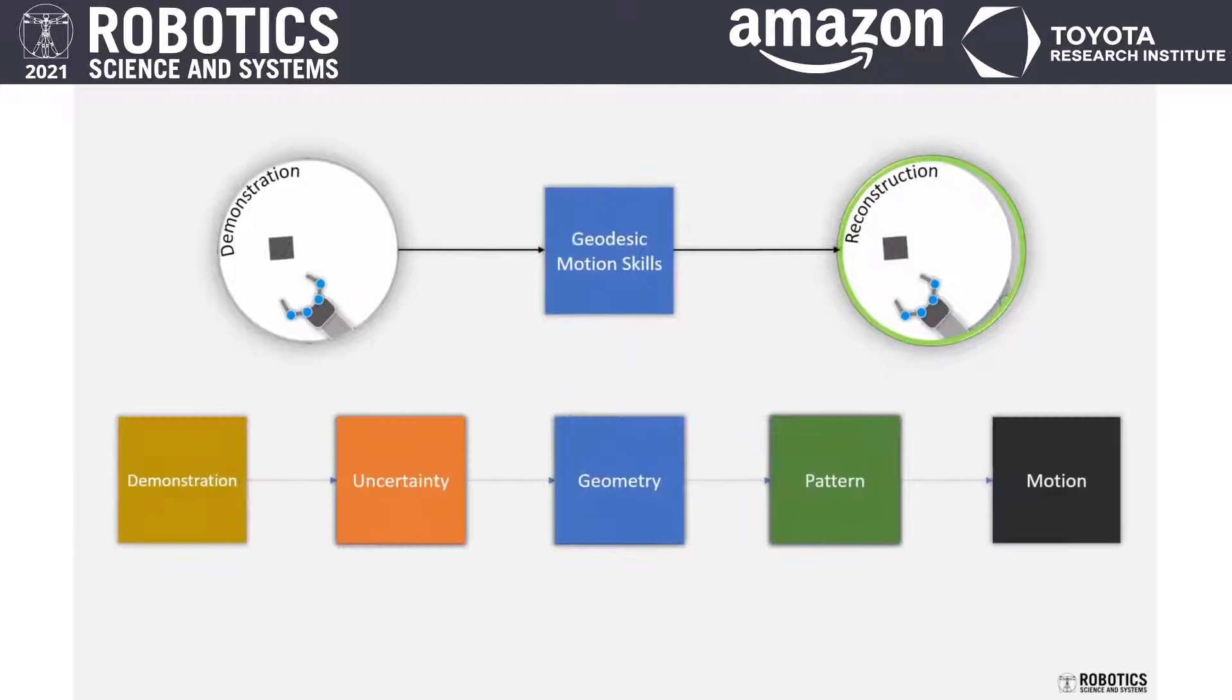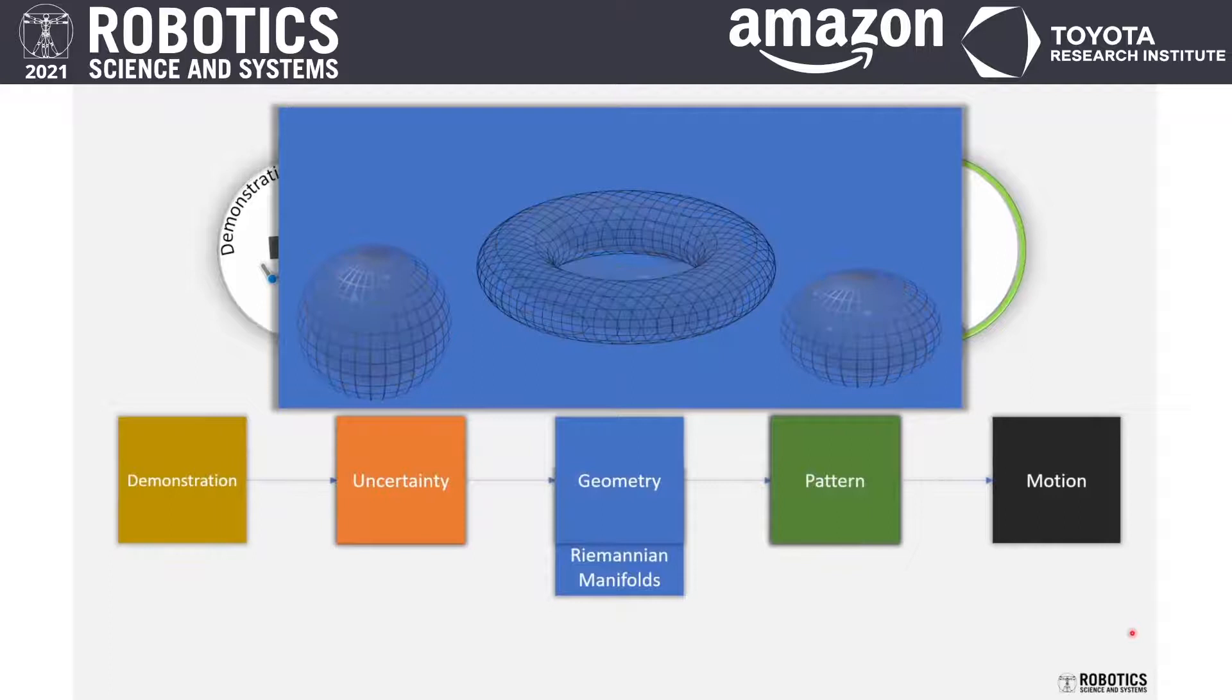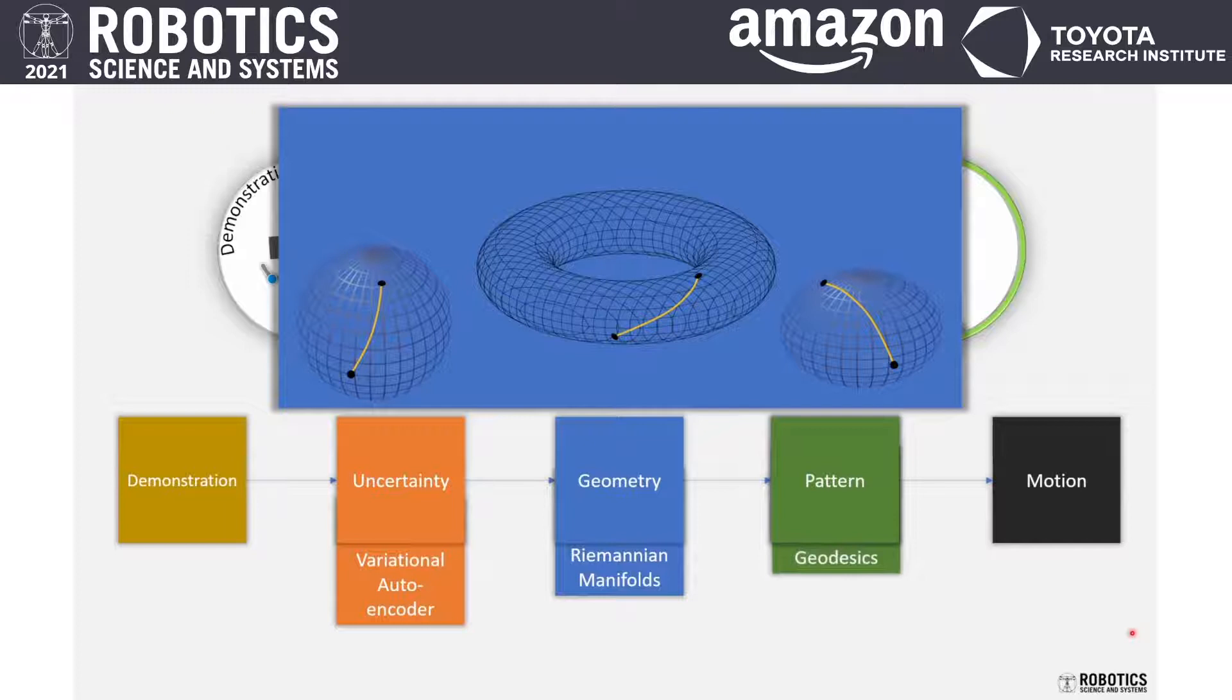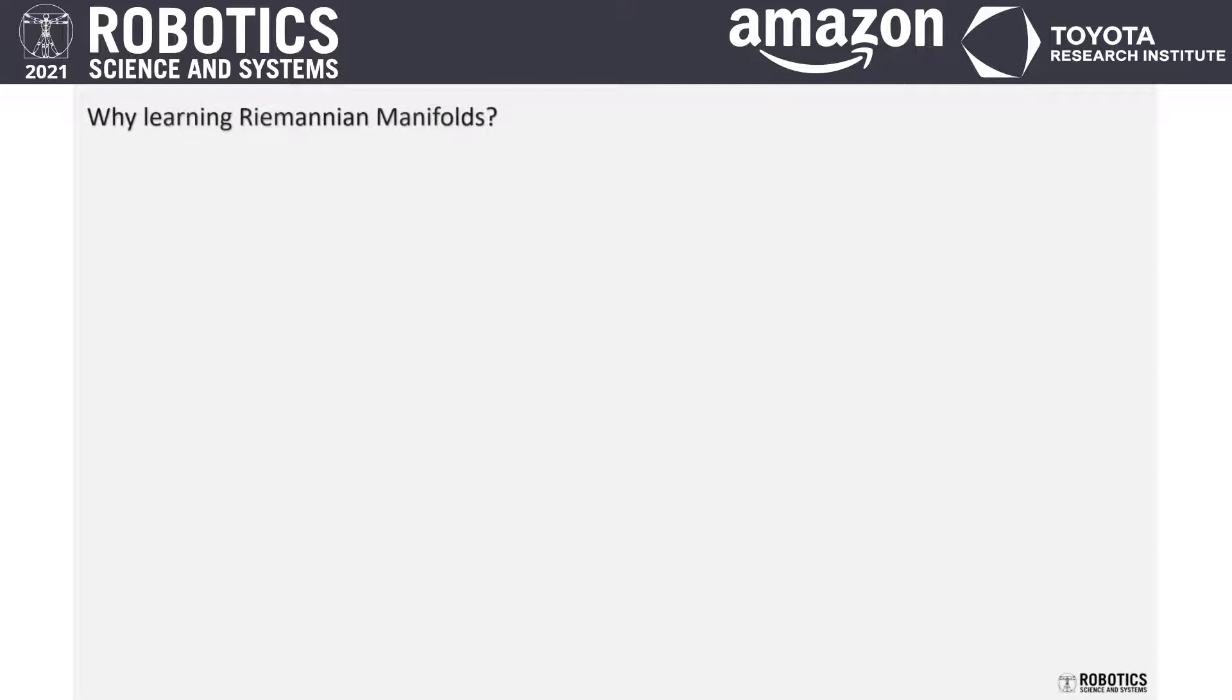We combine all these features and introduce geodesic motion skills. In other words, we build Riemannian Manifolds, which are smooth, differentiable surfaces whose underlying structure is defined by Riemannian metric by encoding the uncertainties in the demonstration data using tools like Variational Autoencoder. Given the metric, we can find underlying patterns in the data using geodesics, the locally shortest path on the manifold, which later can be used as robot motion.